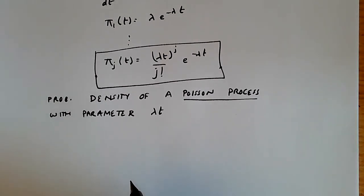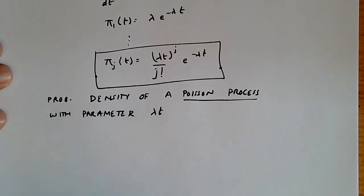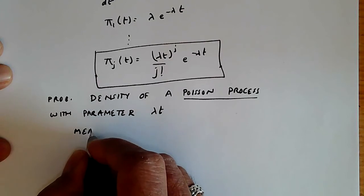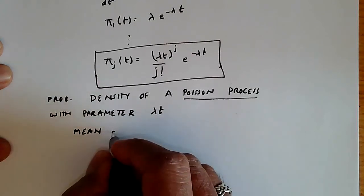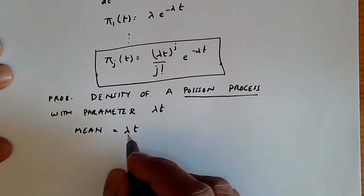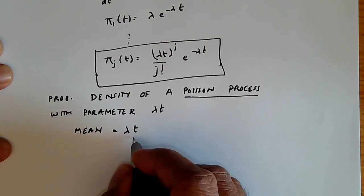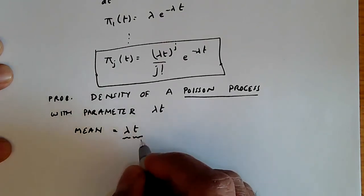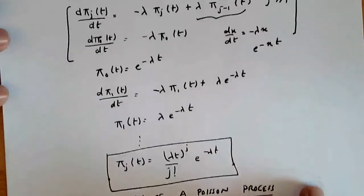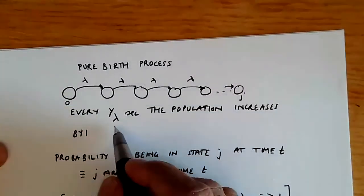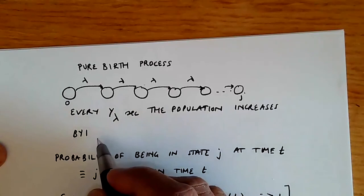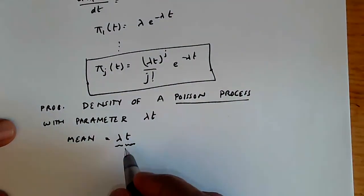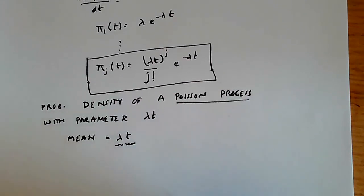The mean of a Poisson process is given by its parameter, so the mean is λt. This means that in t seconds we expect λt arrivals. That makes sense because we expect the population to increase by one every 1/λ seconds, so in t seconds we should expect λt arrivals.